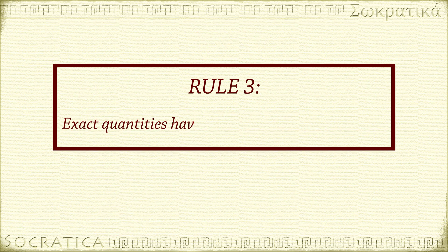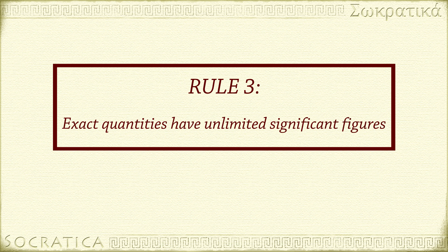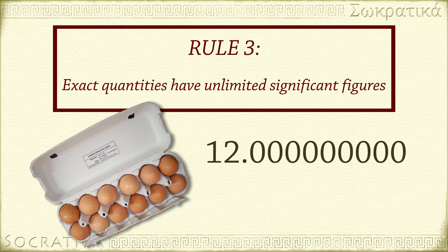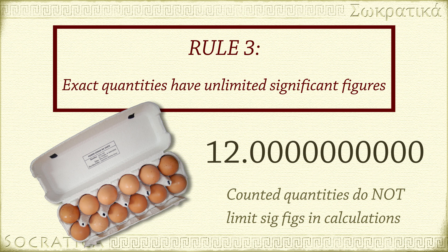Rule 3: if a quantity is known to be exact, it has an unlimited number of significant figures. If you count 12 eggs in a box, there is no uncertainty about this measurement. Counting individual items does not include an uncertain digit at the end — it's sort of like 12.000000000000, continuing with an infinite number of zeros. This is important in calculations, because these values will not limit the number of sig figs in your answer.